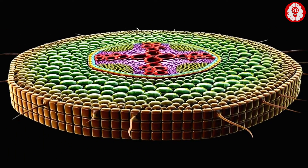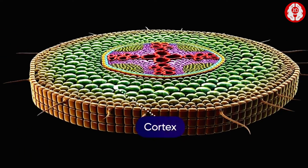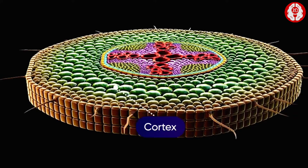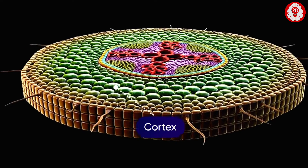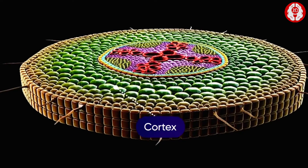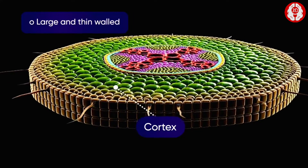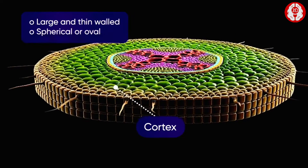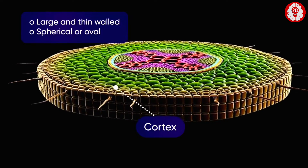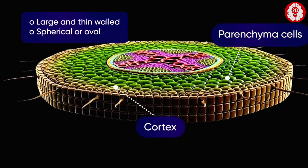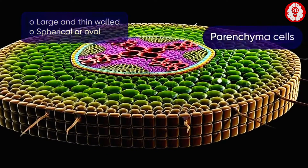The next layer is the cortex. The cortex is composed of large, thin-walled, spherical or oval parenchyma cells.